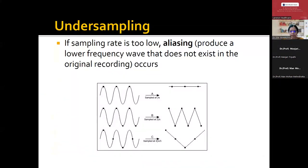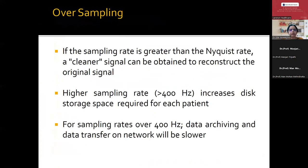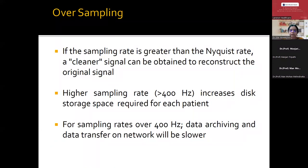If there is undersampling — that is, if the sampling rate is very low — there is something called the aliasing effect, which produces a lower frequency wave that does not exist in the original recording. All EEG machines use the Nyquist principle, which says the sampling rate must be at least twice the fastest frequency of the signal. If there is oversampling, a sharp wave will look like a spike. If there is undersampling, a spike will look like a sharp wave. The sampling rate should be normal — at least twice the highest frequency of the signal.